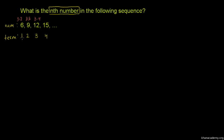Let's check: when n equals 1, we get 6. That's 3 times 1 plus 3. When n equals 2, we get 9, which is 3 times 2 plus 3. When n equals 3, that's 12, which is 3 times 3 plus 3. When n equals 4, we get 15.